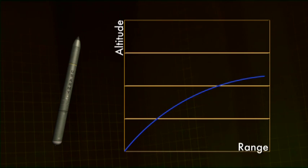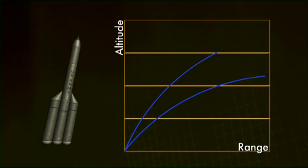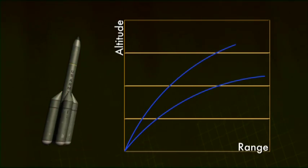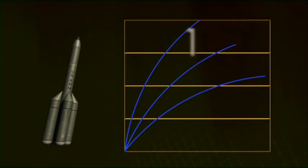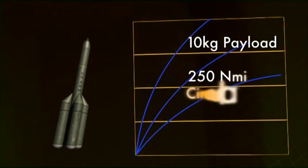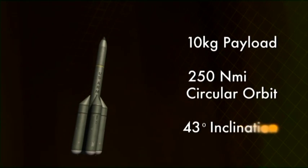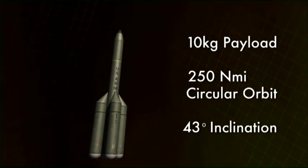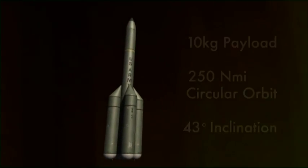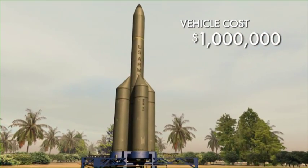By simply adding additional segments, M&Ms can achieve greater performance and expanded capability. Configured for high performance, M&Ms with four strap-ons can deliver a 10 kilogram payload to a 250 nautical mile circular orbit with an inclination of 43 degrees. This performance is achieved at a vehicle cost of just $1 million.